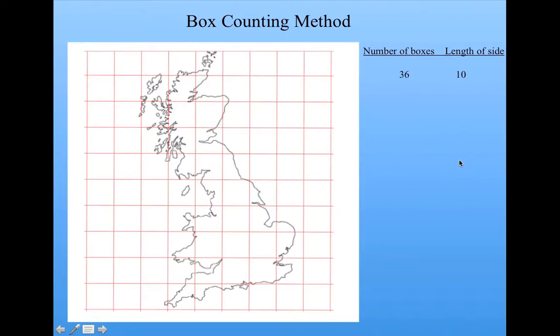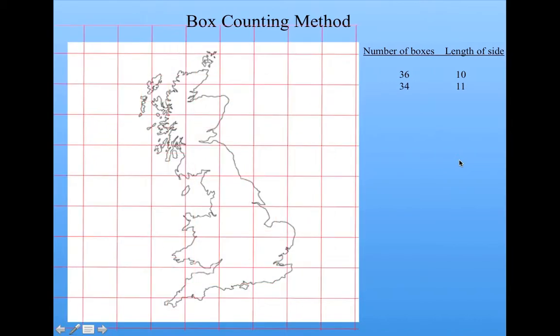Now I go to the next step, and I increase the size of the boxes. So I'm now calculating the number of boxes, but at a different scale. Here, because the length of the side of the box was larger, I got fewer boxes that contained part of this figure. Then I would go up again.